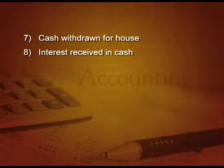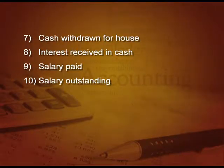Next: salary paid. Salary is an expense — salary account debit — and cash is going out, so To cash. Cash is credit. Next: salary outstanding. We have not paid it, it is outstanding, but it is still an expense. So salary will be debited, but instead of cash, salary outstanding will be credited. Entry: salary account debit, To salary outstanding.